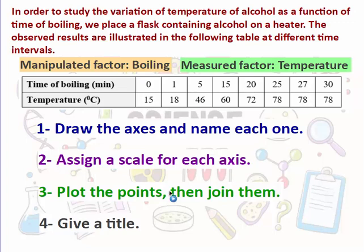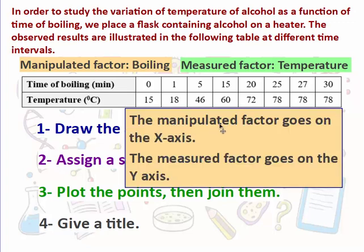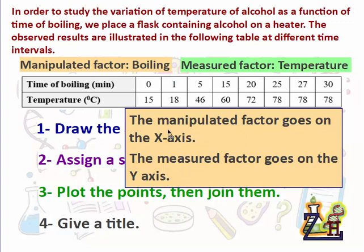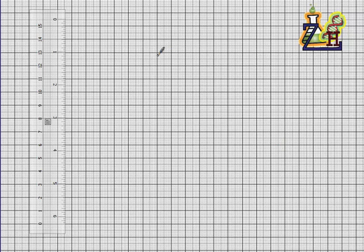The main steps of drawing a graph: first, we draw the axes and name each one. We have to pay attention that the manipulated factor goes on the x-axis — the horizontal axis — and the measured factor goes on the y-axis. Note that sometimes the x-axis doesn't show the manipulated factor directly; we'll see how later on.